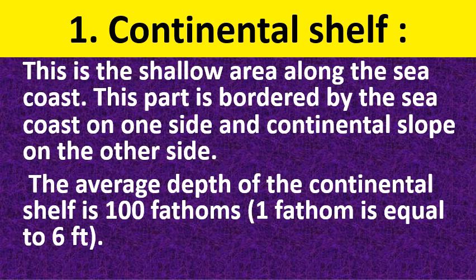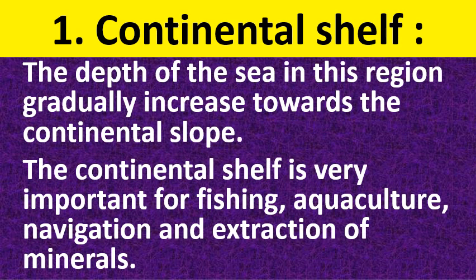Continental shelf is the shallow area along the sea coast, bordered by the sea coast on one side and the continental slope on the other. The average depth of the continental shelf is 100 fathoms — one fathom equals 6 feet. The depth gradually increases toward the continental slope. This area is suitable for fishermen to catch fish, and it is also useful for aquaculture, navigation, and extraction of minerals.